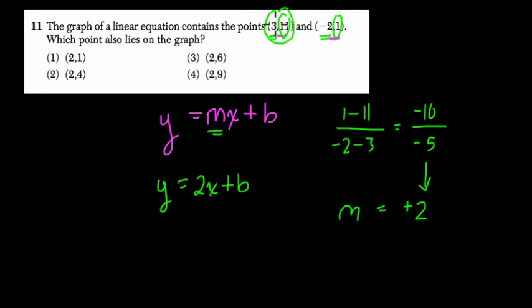I'm going to plug in the point (3,11). You can plug in either point. 11 is the y value and 3 is the x value. So 2 times 3 is 6, and 6 plus b equals 11. What is b? Well, b is 5, right? 5 plus 6 is 11. So now our equation is y = 2x + 5.